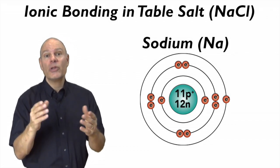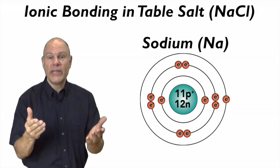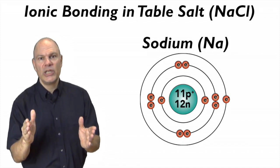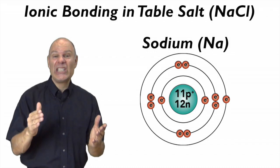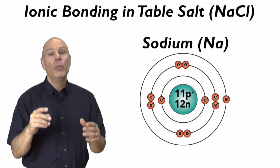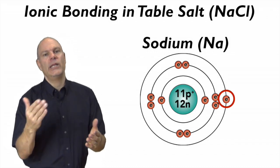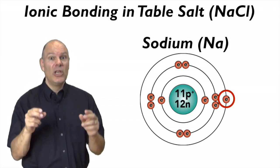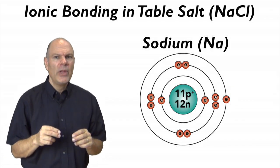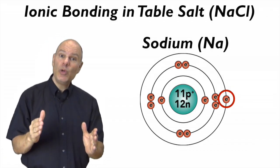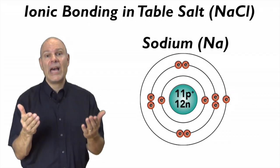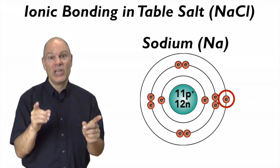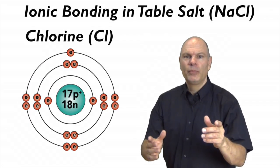If you draw out sodium's orbital structure following the octet rule, you'll see that it has two electrons in its first orbital, eight in its second orbital, which leaves one lone electron in the third orbital. That one lone electron makes sodium an unhappy atom. The easiest move would be for sodium to give away that lone electron, but it can't do it on its own — it's going to need some help. Here's chlorine.